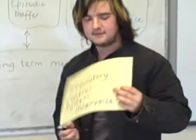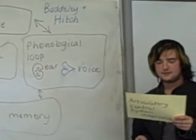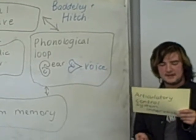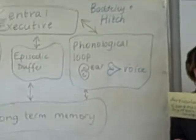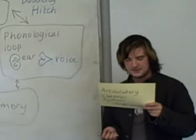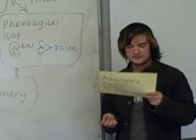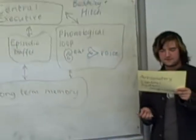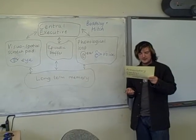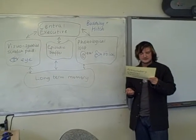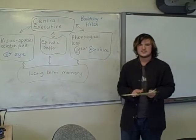The articulatory control system is an inner voice allowing sub-vocal repetition of the acoustically encoded items stored in the phonological store. This means you can still hear other things whilst thinking about something else — multitasking.